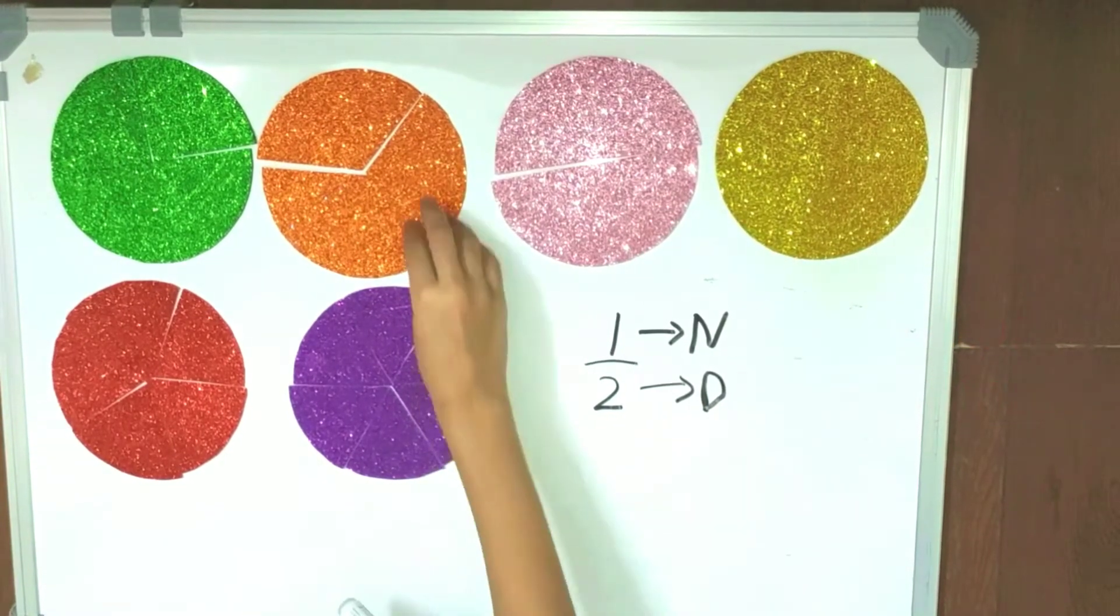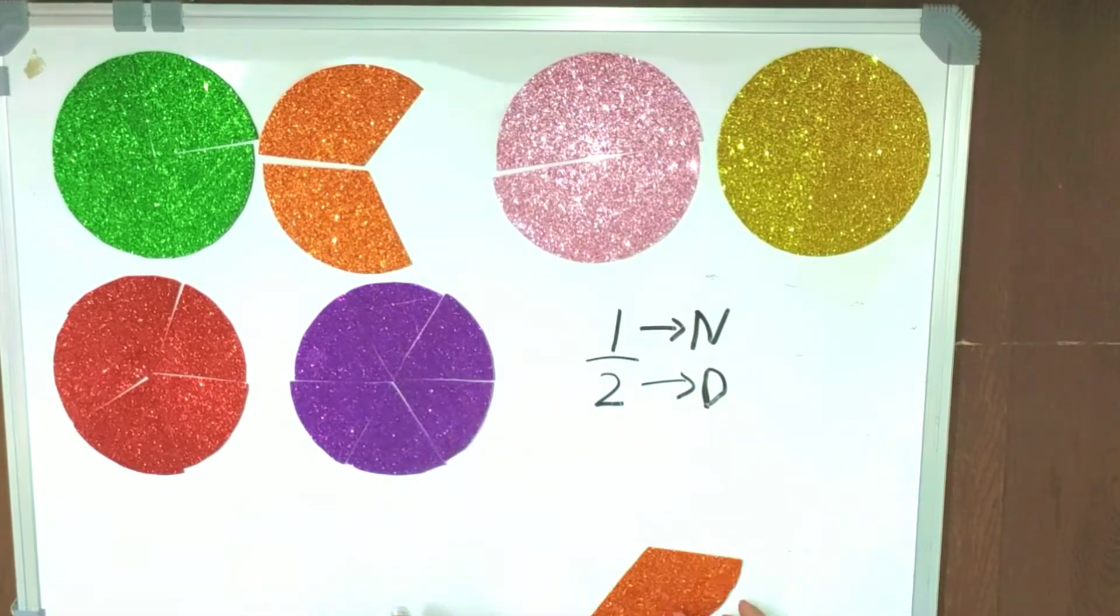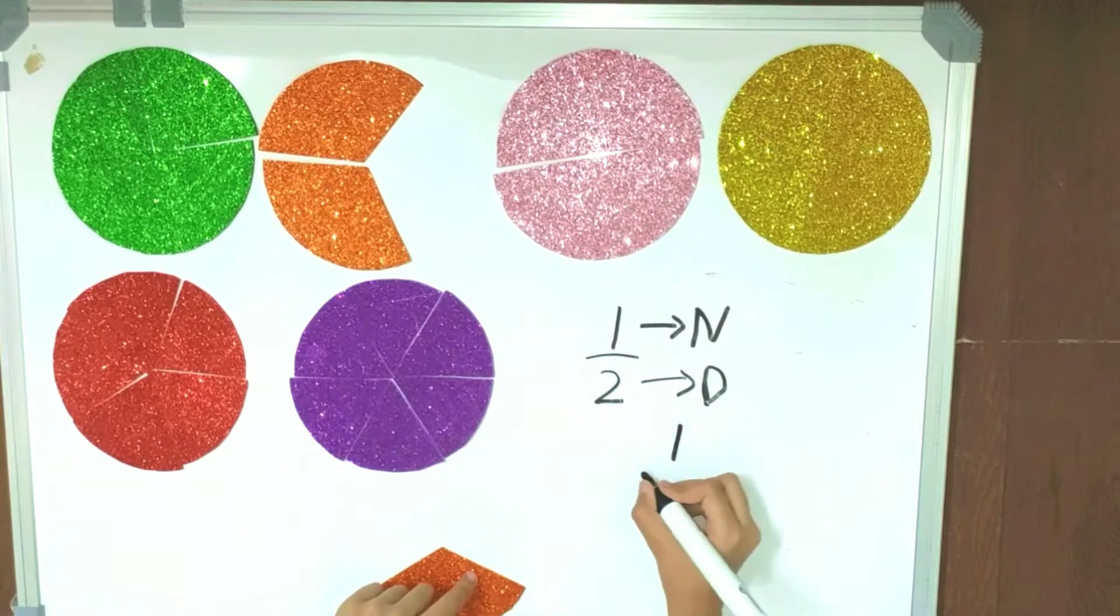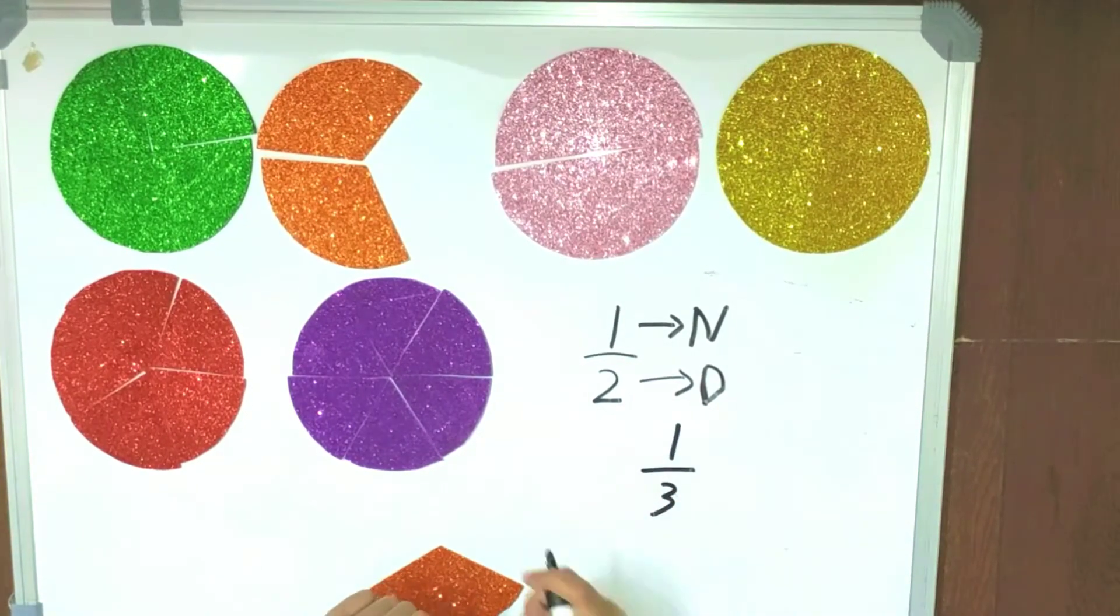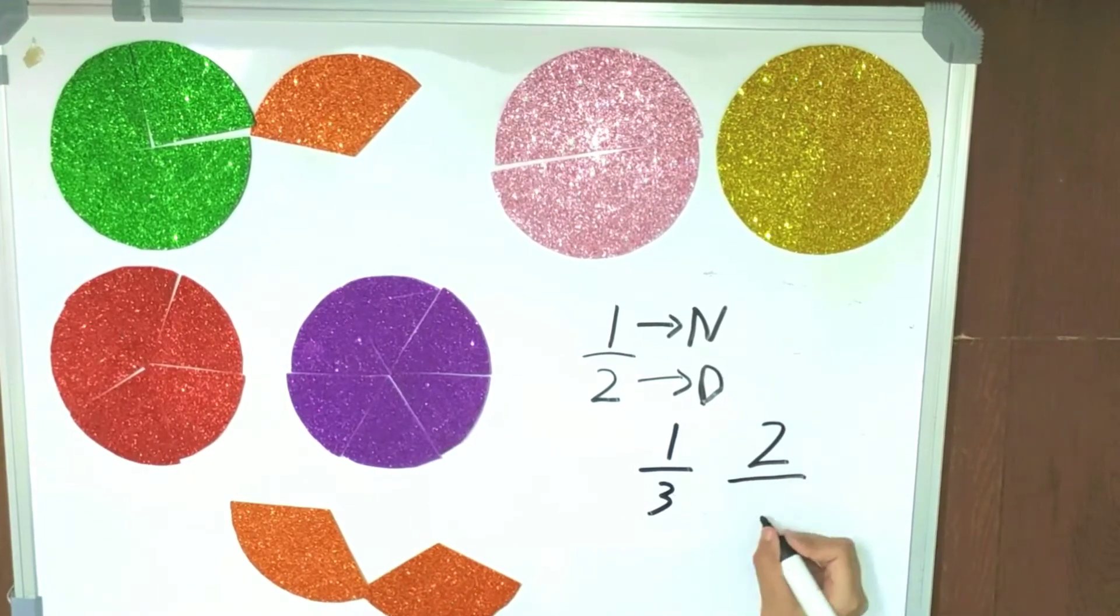Similarly, if we divide the circle into three equal parts and take one from it, we will call it one by three. And if we take two from it, we will say it two by three.